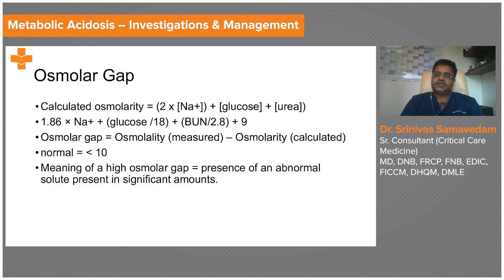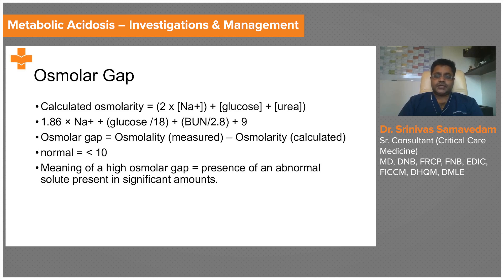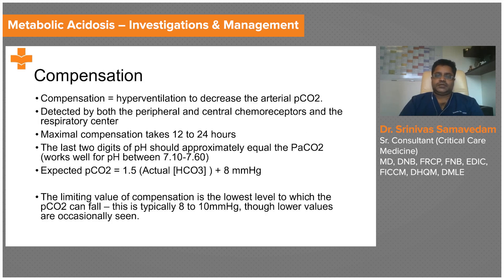If the osmolar gap is more than 10, it indicates the presence of an abnormal solute in significant amounts in the blood — this could be ethanol or ethylene glycol. This is significant for somebody who presents with a high anion gap metabolic acidosis for which you do not have any other explainable cause.